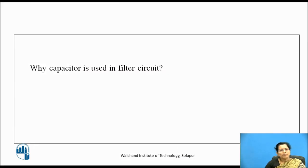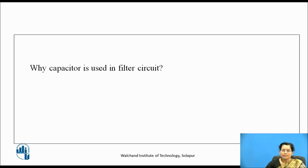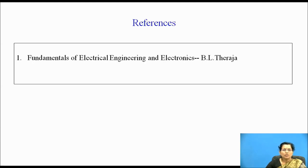Now pause the video and think about why a capacitor is used in a filter circuit. The answer is: the capacitor blocks DC and passes AC — that's why it is used in filter circuits. You can refer to the book Fundamentals of Electrical Engineering and Electronics by B.L. Thareja. Thank you.